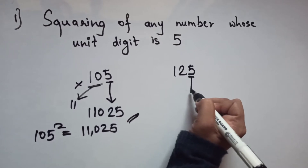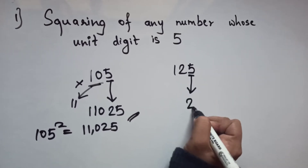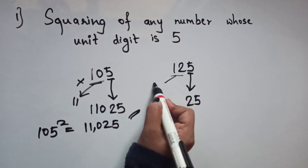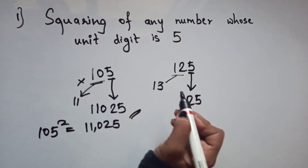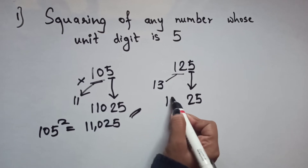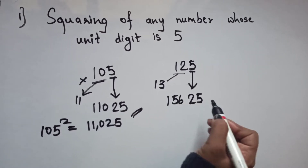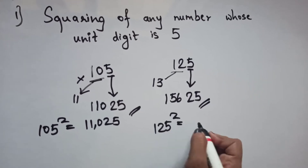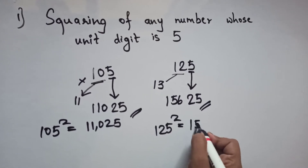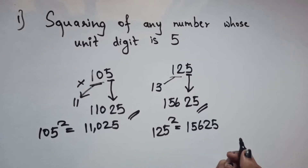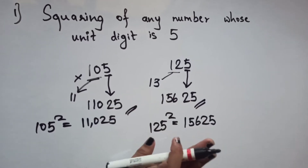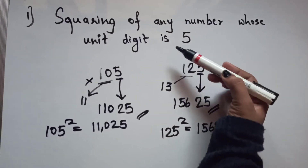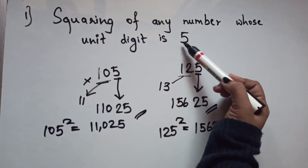After 12 comes 13, so multiply 12 by 13 to get 156. Therefore the square of 125 is 15625. Similarly, you can do these calculations for other numbers ending in 5.